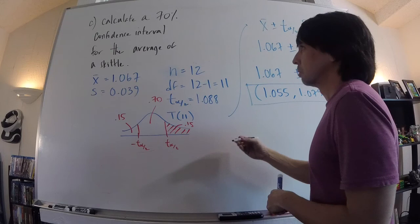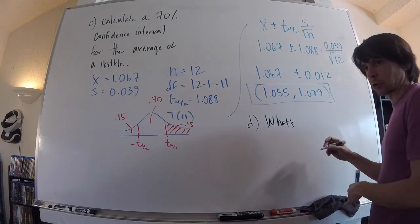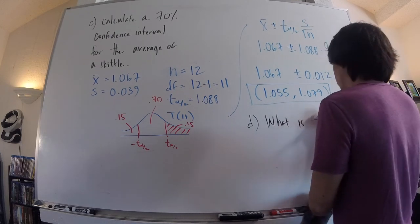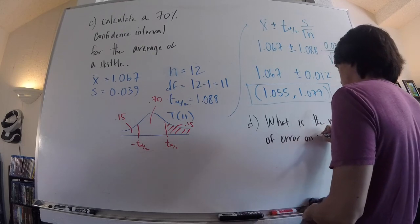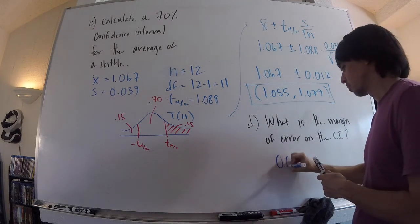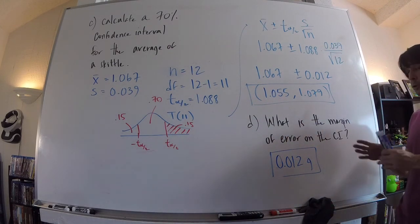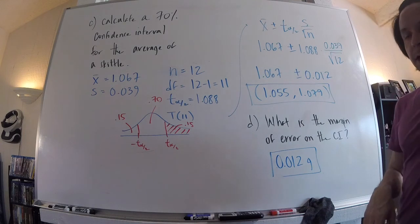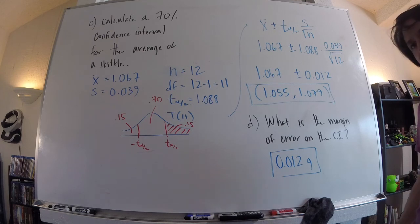The margin of error is 0.012 grams, and that's specific to a 70% confidence interval. If you want greater confidence like 90%, you have to make a wider interval with a bigger margin of error. That's it for section 8.3 — do your homework, check the quizzes and videos as usual. Chapter 9 is next, and then we have Exam 3.